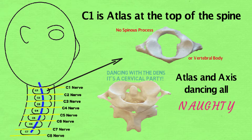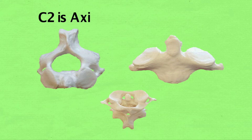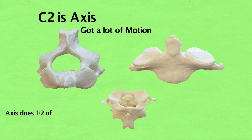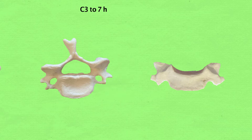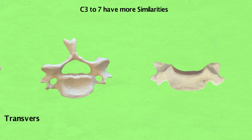Atlas and Axis dancing — C2 is Axis, got a lot of motion. Axis does have cervical rotation. Dens from the Axis up to the Atlas. Dens is the vertebral body of the Axis.